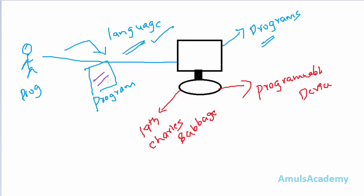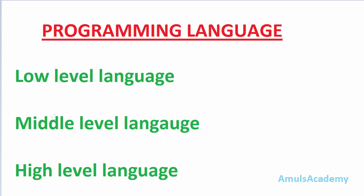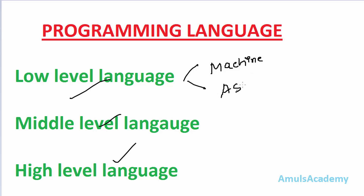Different types of programming languages are present and we will discuss a few. There are three types: low level language, middle level language, and high level language. In the low level language there are two types — one is called machine language and another one is assembly language.